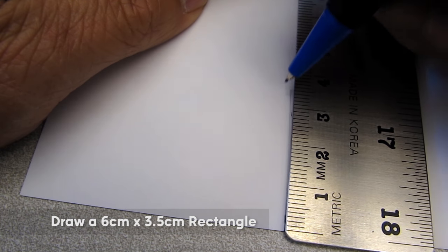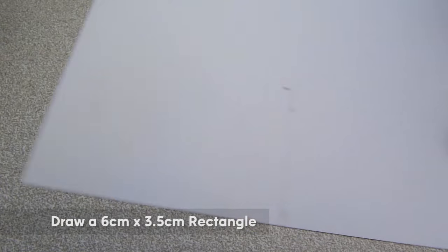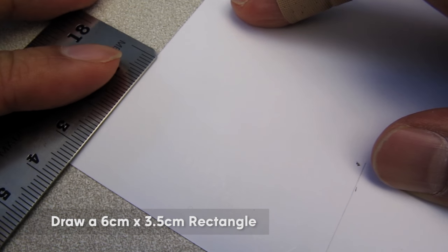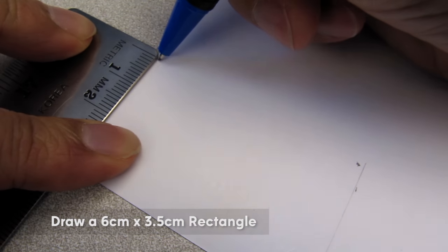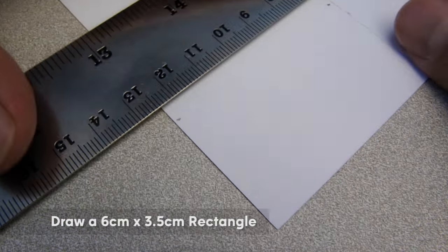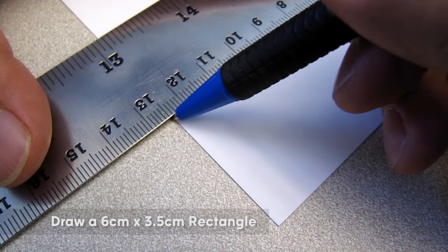Now measure 3.5cm on the line that was drawn. Take the same measurement on the opposite side of the line. Connect the dots to make a rectangle.